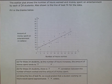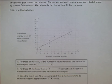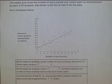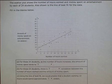The scatter plot shows the number of hours worked and money spent on entertainment by each of 24 students. Also shown is the line of best fit for the data. Fill in the blanks below.